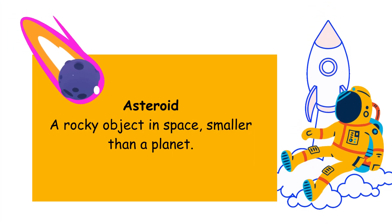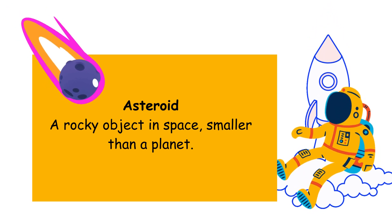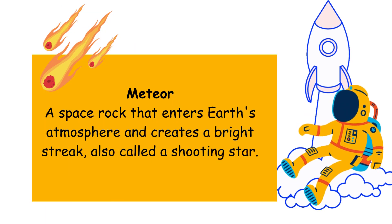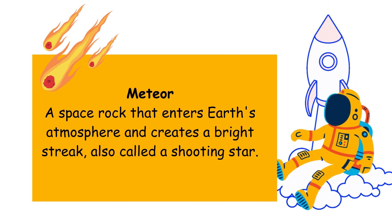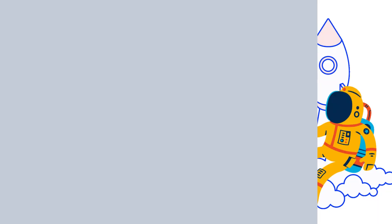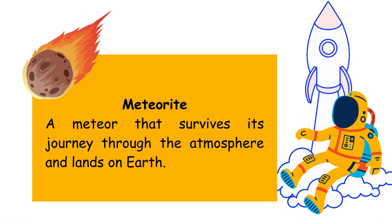Asteroid: a rocky object in space, smaller than a planet. Meteor: a space rock that enters Earth's atmosphere and creates a bright streak, also called a shooting star. Meteorite: a meteor that survives its journey through the atmosphere and lands on Earth.